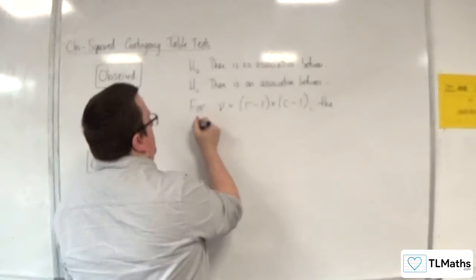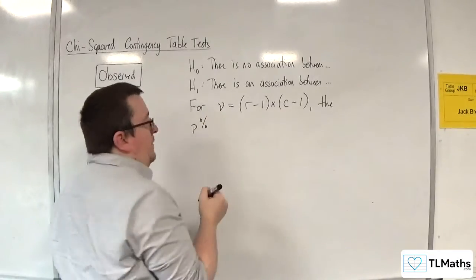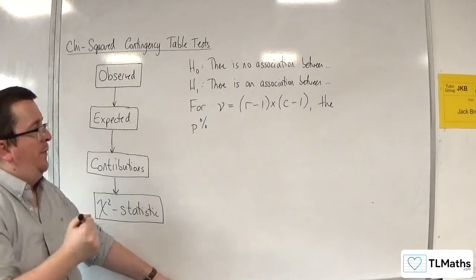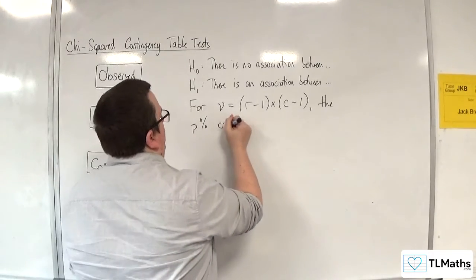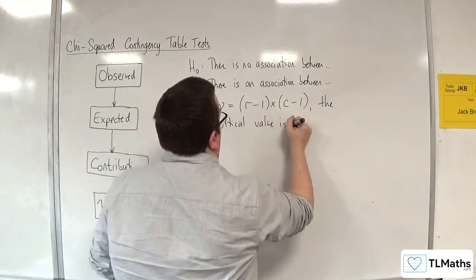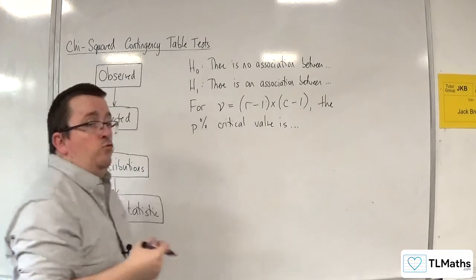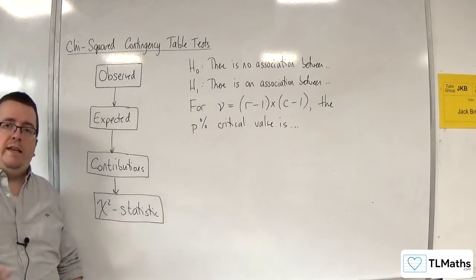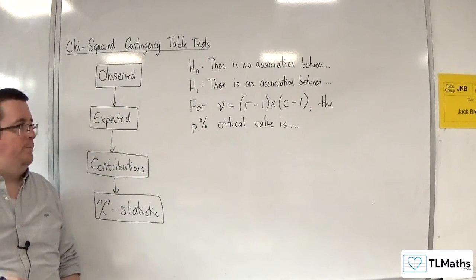Whatever the significance level you're given, the P% critical value is, you'll be able to read that from the tables in the formula booklet.